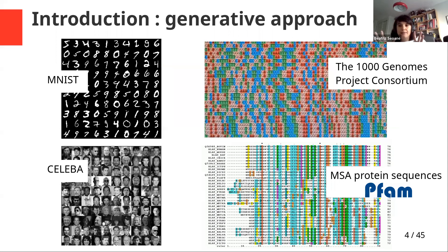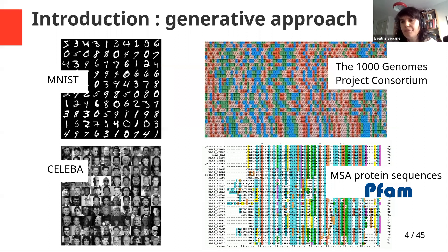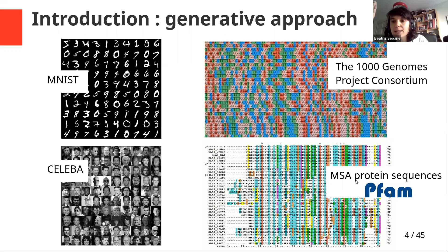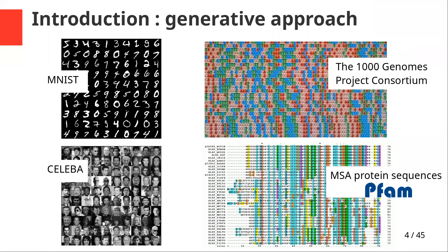We want to learn different kinds of data. In this presentation I will show results for several datasets: for instance, MNIST — the handwritten digits database — and CelebA, a dataset of pictures of celebrities. We have also been quite interested in sequence data: DNA sequences, where we have different nucleotides at each position, or proteins, where we study families of proteins with common ancestors — for example, a particular protein found across different organisms, comparing sequences to extract statistics.